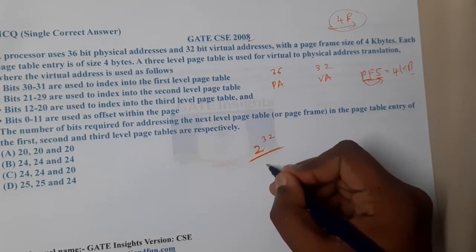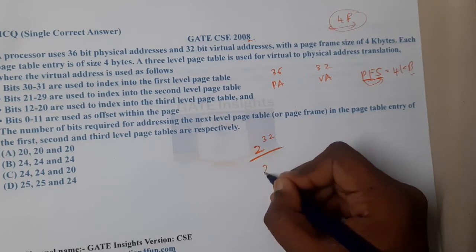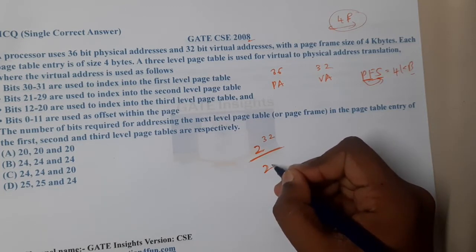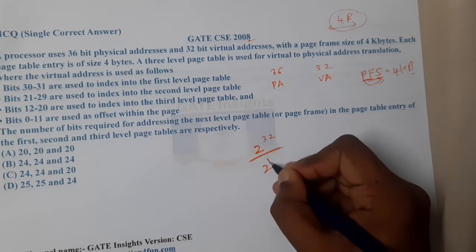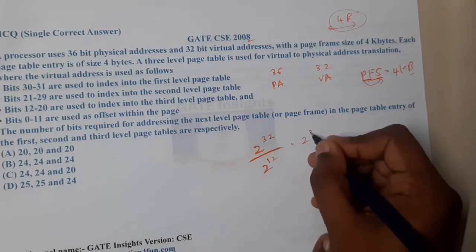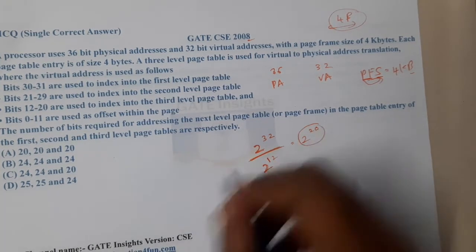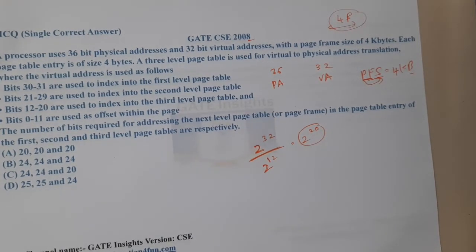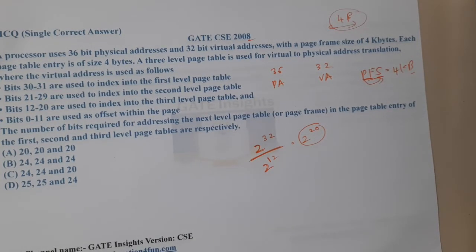That is nothing but 2 power - KB to B - so it is 2 power 12. So we will end up with 2 power 20. So we ended up with 2 power 20.